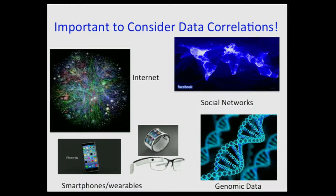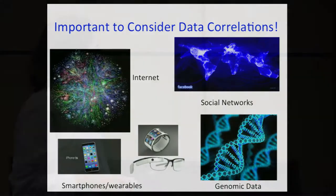Large-scale data sets exhibit interesting structural and temporal correlations. For example, here's a visualization of different web links on the Internet, where each vertex corresponds to a particular IP address and connections correspond to web links. This is a representation of social connections on Facebook—just a sampled fraction plotted on a coordinate system—and we can see the emergence of continents. Similar correlations also exist in genomic data and other IoT applications.